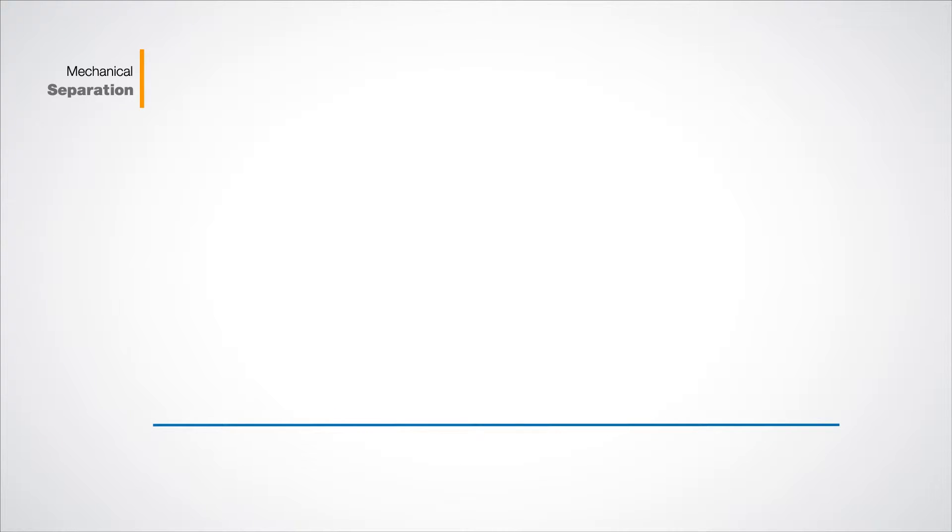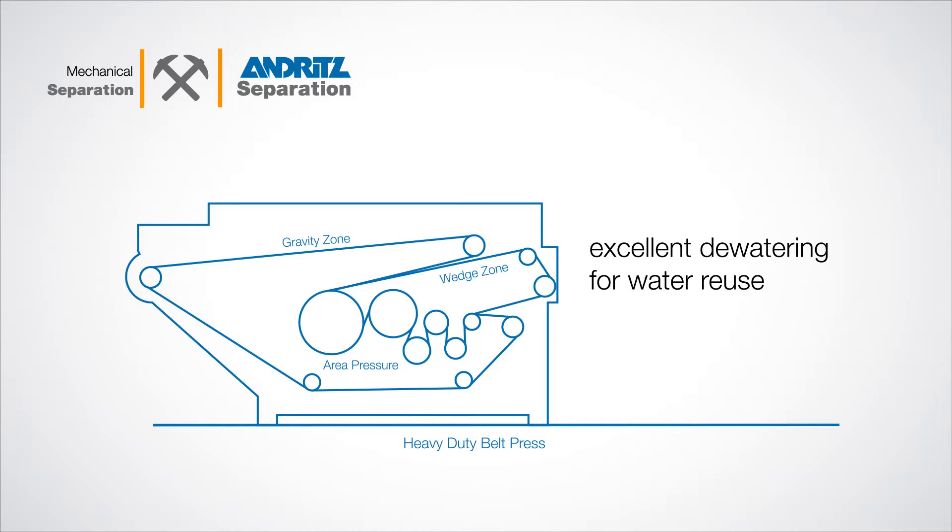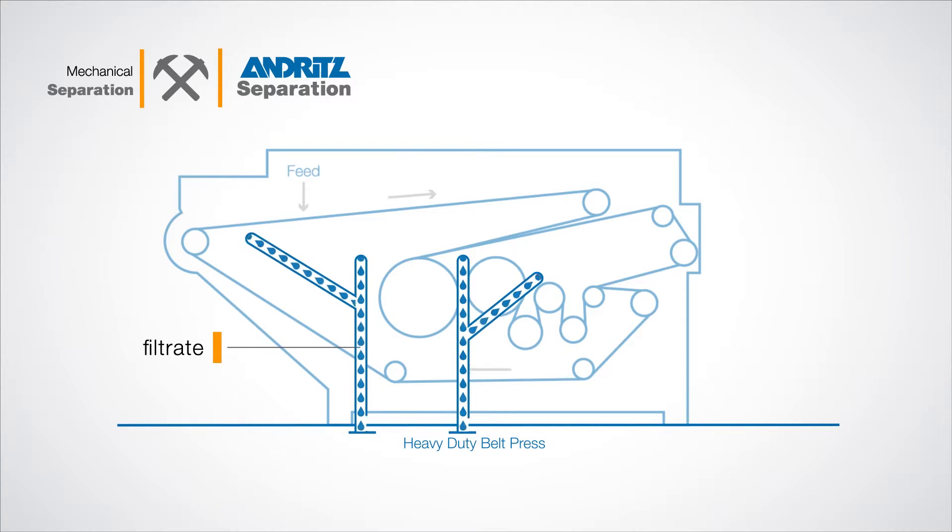For instance, when using filtration technology in coal beneficiation plants, filtration machines like the Andritz Separation Heavy Duty Belt Press are only used to dewater coal tailings in order to save the extracted water for reuse in the production process. To separate the water, the sludge is first sandwiched between two belts and then squeezed through rollers. The filtrate exits through drains while solids are discharged onto a conveyor belt.